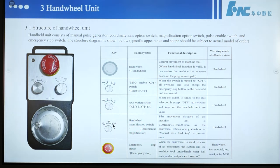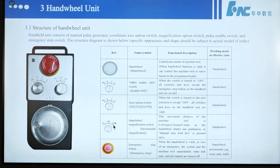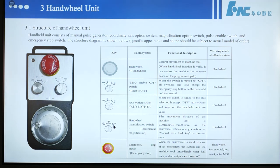This is the handwheel magnification switch: x1, x10, x100. The movement distance of the machine tool is 0.001 mm, 0.01 mm, or 0.1 mm per graduation as the handwheel rotates one graduation, or when the manual axis feed key is pressed once.